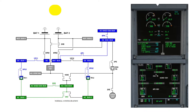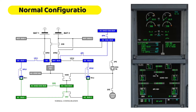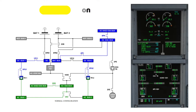In normal configuration, Transformer Rectifier TR1 supplies successively DC Bus 1, DC Battery Bus, DC Essential Bus, and DC Essential Shedible Bus. TR2 supplies only DC Bus 2.